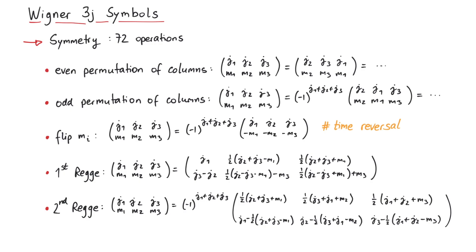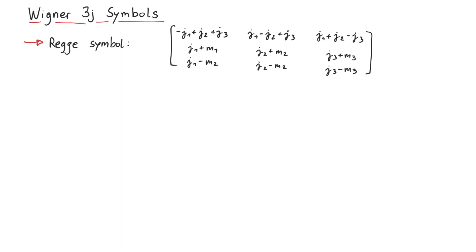First, we write our six elements of the 3j symbol inside a so-called Regge symbol. Again, this is not a matrix, just a convenient way of placing the values in a 3x3 grid. Note that the sum of all columns, and the sum of all rows, is equal to j1 plus j2 plus j3. Now, whether we permute any of the columns, or any of the rows, this fact won't change. Also, if we mirror the entries along the diagonal, similar to a matrix transposition, the sum stays the same.